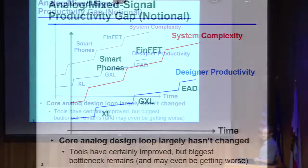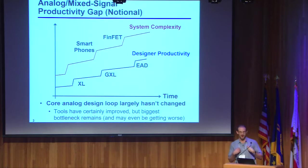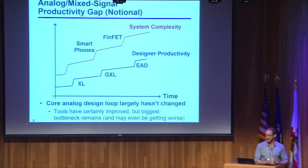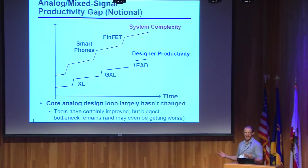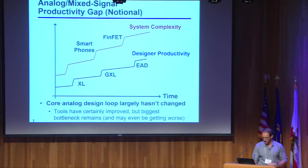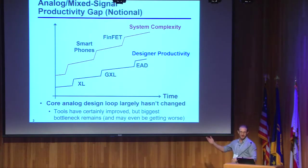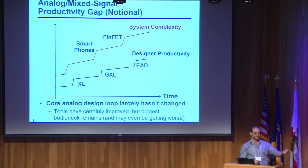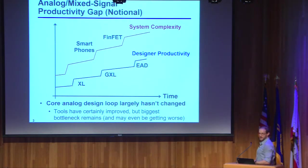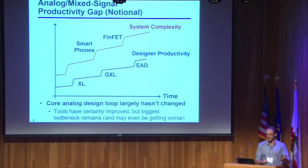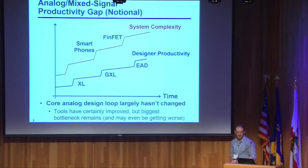I want to give a notional view — really my own personal view — of why there is a productivity gap in the analog world. If you look over time at the complexity of systems people are dealing with, it does the scaling thing, but it tends to do step functions every time some new hot product comes along. When smartphones came around, the touch interface was the key thing, and a lot of analog mixed-signal stuff had to be embedded in the phone.